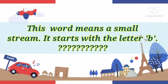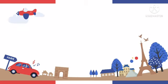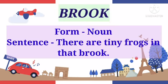Number 1. This word means a small stream. It starts with the letter B. Can you guess the word? The word is brook. Form: it is a noun. Sentence: There are tiny frogs in that brook.